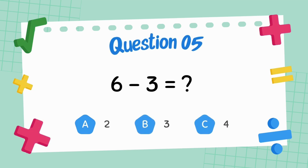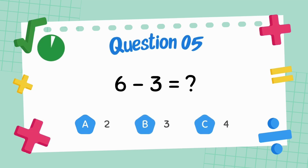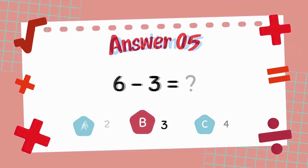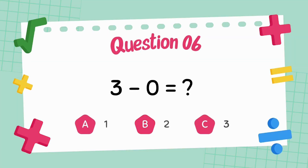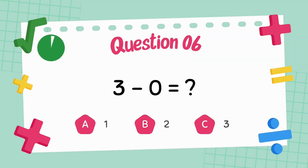What is 6 minus 3? The answer is 3. What is 6 minus 3? The answer is 3.